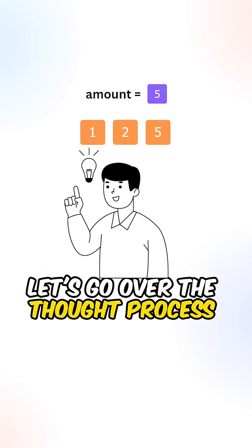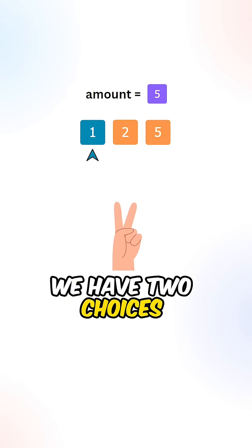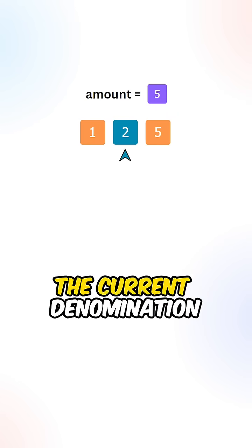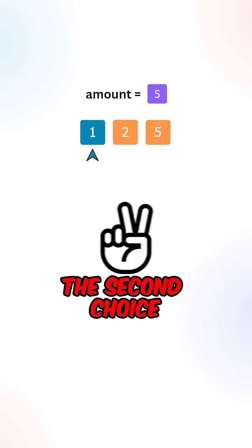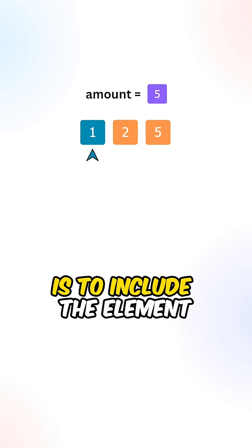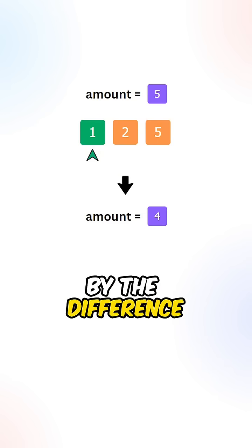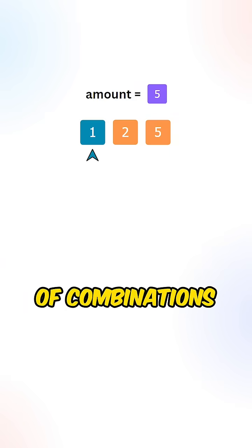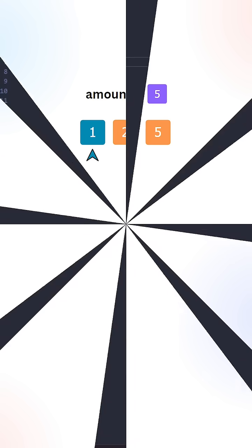Let's go over the DP process. For each coin denomination, we have 2 choices. Our first choice is to skip the current denomination and move on to the next one. The second choice is to include the element in the combination and update the amount by the difference. We will find the total number of combinations from both choices. When the amount reaches 0, we have found 1 valid combination.